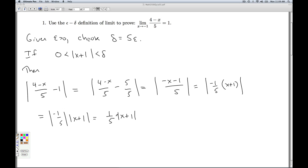And then here's the critical point. I'm assuming that the absolute value of x plus 1 in particular is less than delta. So this is less than 1 fifth delta. So that's where I'm using this hypothesis right here. Now, what did I choose delta to be? I chose delta to be 5 epsilon. So this is 1 fifth times 5 epsilon, which is epsilon.